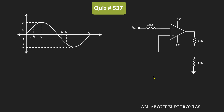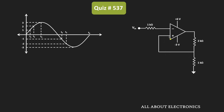If you observe the circuit, it is nothing but a Schmitt trigger, because there is positive feedback from the output to the input side. Moreover, for the given op-amp, the positive and negative saturation voltages are different.